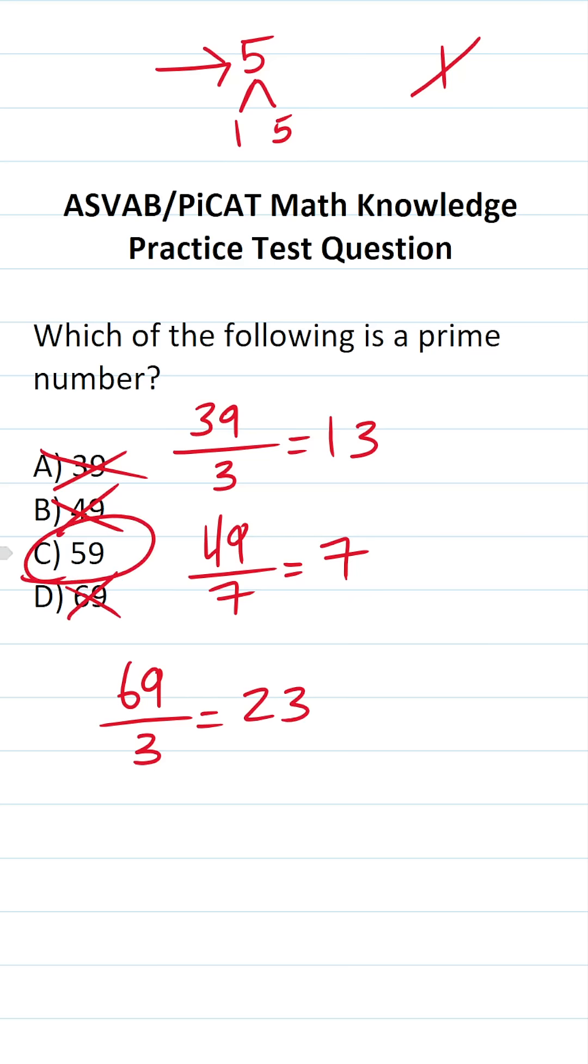By process of elimination, we know 59 is a prime number.